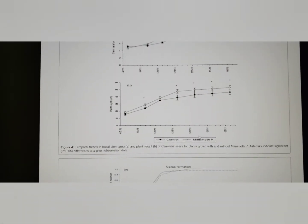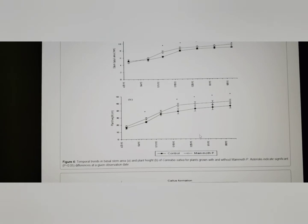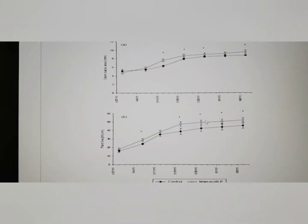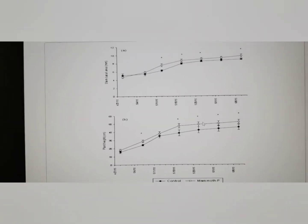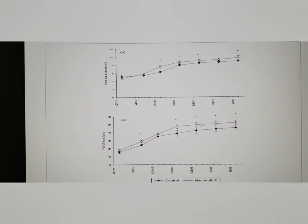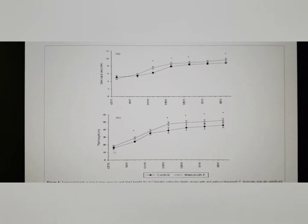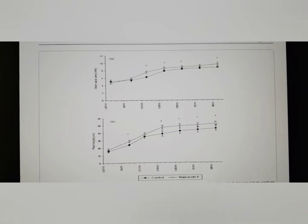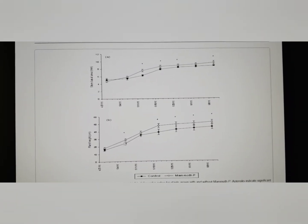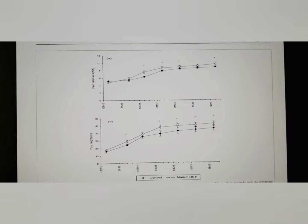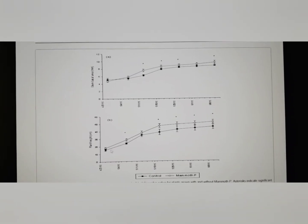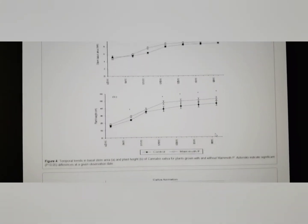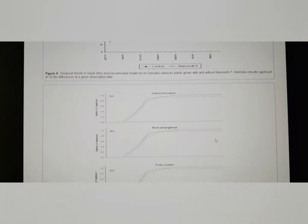Let's take a look at this chart. So this is just the trend, a time lapse of the trend of plant height and stem basal area. So throughout the whole period of the grow, the plant treated with mammoth P had a higher height for the whole duration of the grow compared to the plant that was not treated with mammoth P. So these are pretty decisive results here.